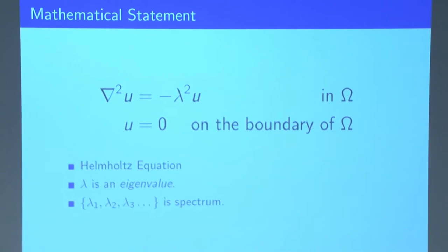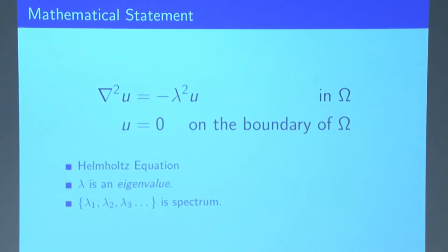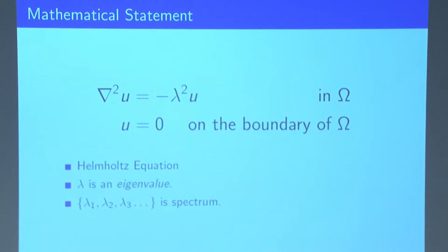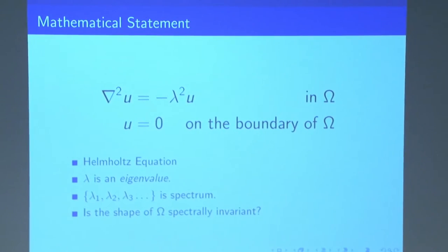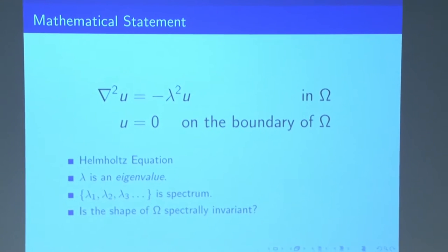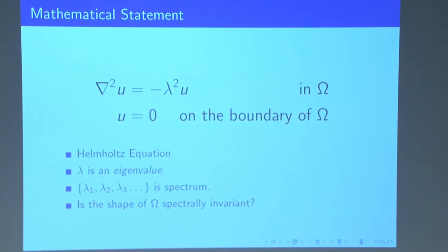And these lambdas over here, these constants lambdas, only certain values of lambda will actually produce a solution u on our drum omega. And these lambdas are known as eigenvalues. And now we should all think of these eigenvalues analogous to actual frequencies in actual reality. And like frequencies, if we take the set of all of these eigenvalues, then what we have is analogous to the spectrum in reality. And so, now we can rephrase our question by Kac as is the shape of omega spectrally invariant? And by spectrally invariant, I mean determined by the spectrum. So now we have our problem well posed.